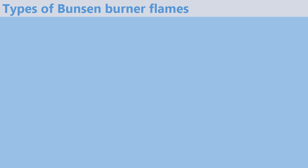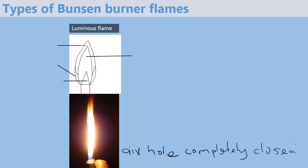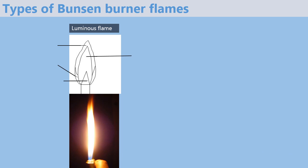The first type of flame is known as the luminous flame. This type of flame is usually formed when the air hole of the Bunsen burner is completely closed. No air enters the chimney and therefore the flame produced is bright yellow, large and wavy. It gives out a lot of light and therefore it is described as a luminous flame. From the picture you can see it is really bright.